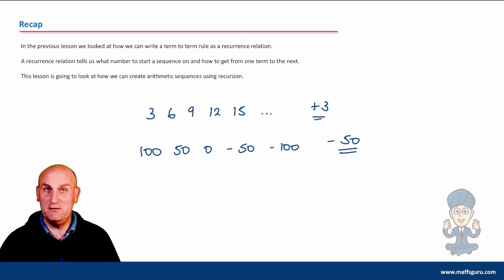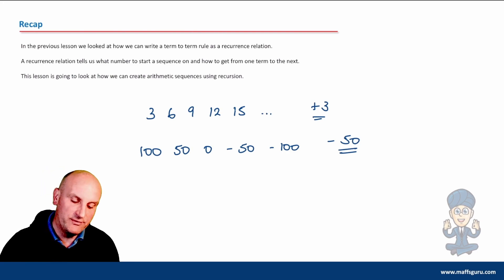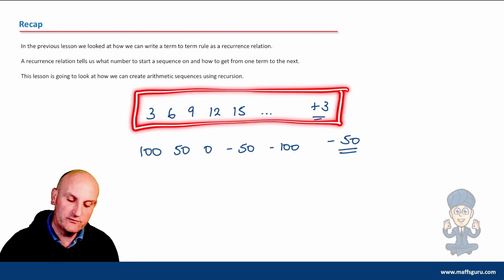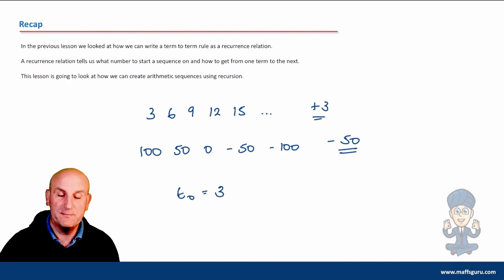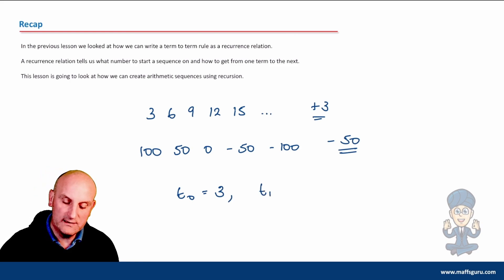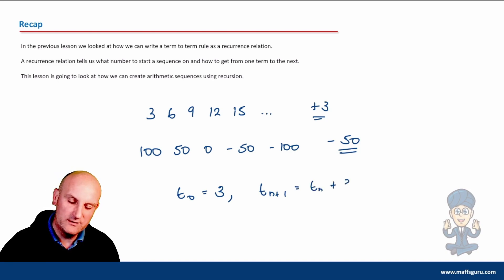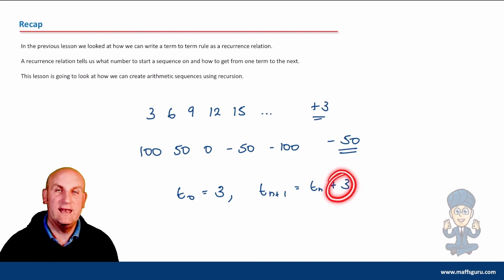What on earth was a recurrence relation? Well, if you remember, we could write this in terms of some mathematical notation by saying, for example, T₀ equals three. Now T₀ is my first term. I then write T of n plus one is equal to T of n plus three. So my first term here is three, and my next term is got by taking my current term and adding three to it. So that was a recap of the previous video.